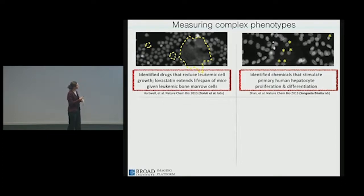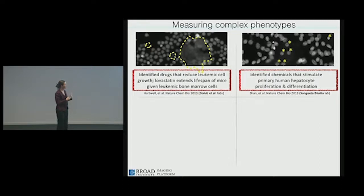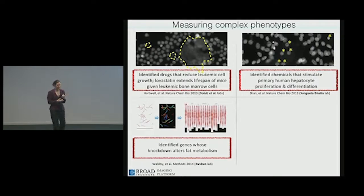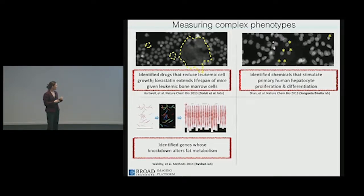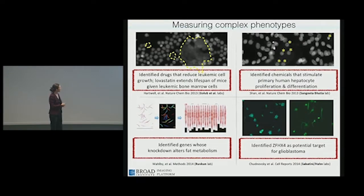In that experiment, the goal was to differentiate starred cells—the human hepatocytes—from fibroblasts. The difference was subtle: cells were a bit smaller, rounder, blurrier, but it required machine learning to distinguish them nicely. Another whole-organism project with the Ruvkin lab at MGH involved fat metabolism. It's hard to study metabolism in cell culture because we don't know all the components involved, so in this whole-organism system with therapeutic potential, they wanted to identify genes whose knockdown would alter fat metabolism. Carolina Wählby in the group developed algorithms to disentangle the worms, then we used machine learning to look at different distributions of fat along the body.